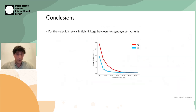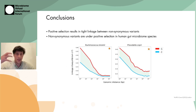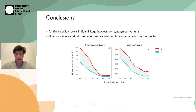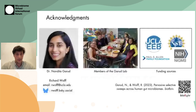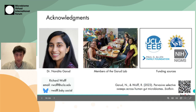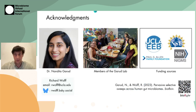To wrap up: positive selection results in tight linkage between non-synonymous variants. We found that non-synonymous variants are under positive selection in human gut microbiome species across the whole genome. We also developed a statistic called ILDS and used it to recover signatures of many selective sweeps mediated by horizontal gene transfer. I'd like to give acknowledgments to my advisor and co-author Dr. Nandita Garud, as well as members of the Garud Lab and our funding sources. The paper is currently at preprint, and my contact information is available as well. Thank you for listening.